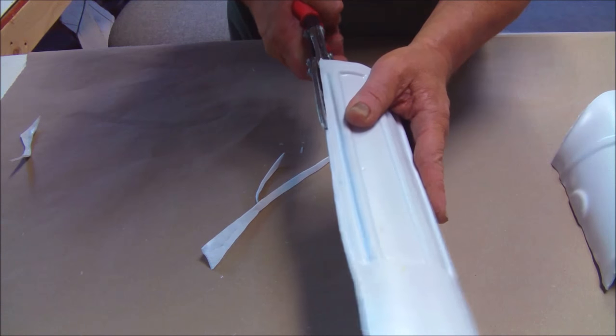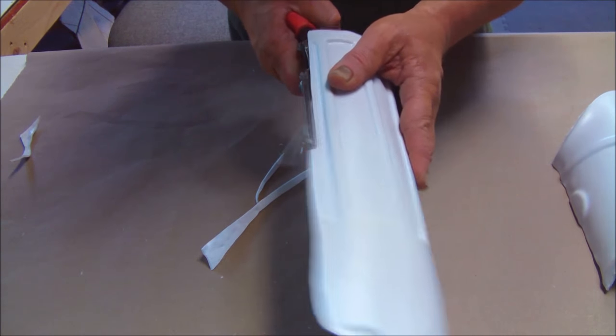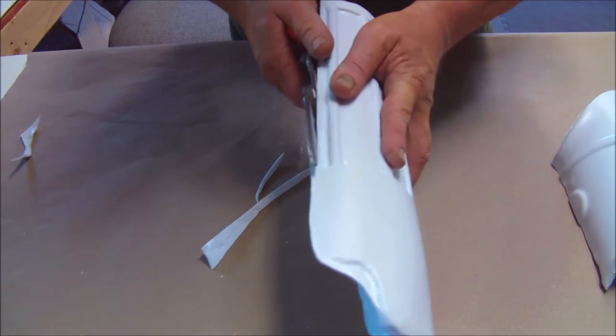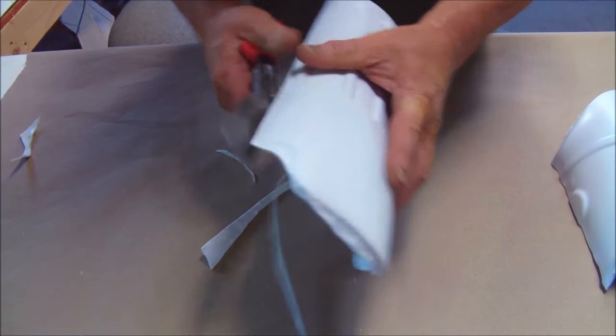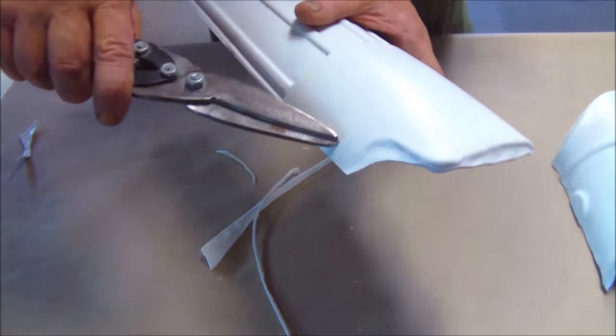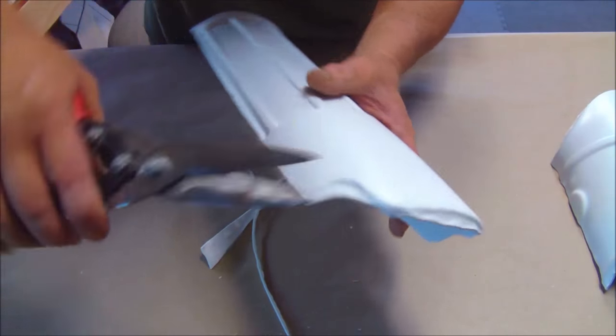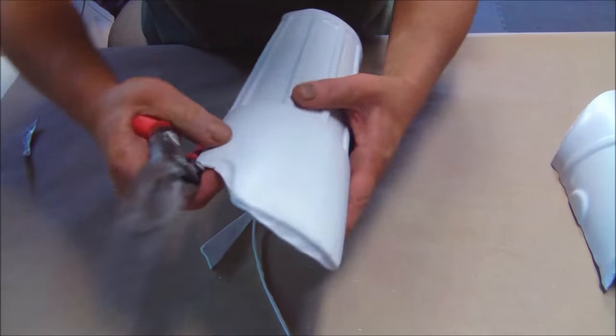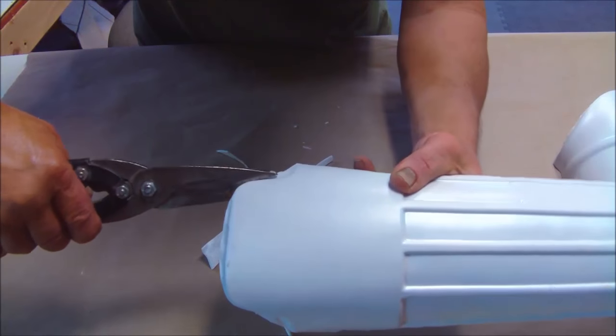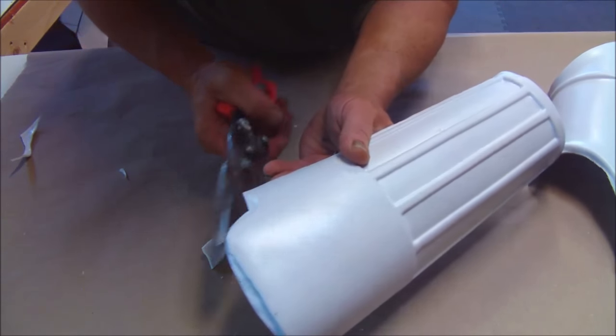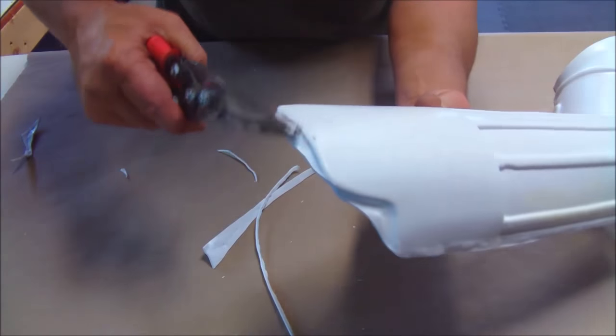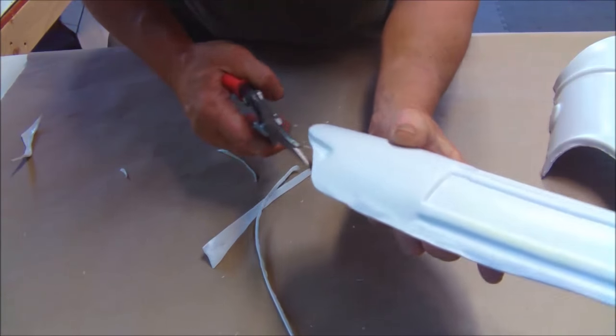We just take our shears and trim that guy off. If you can tell, this is the edge of the part here. I'm just going to rough it out, and then the rest is handled on a belt sander.